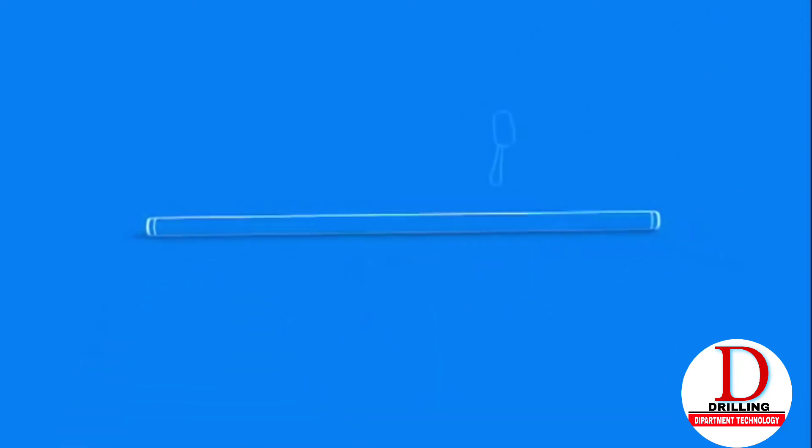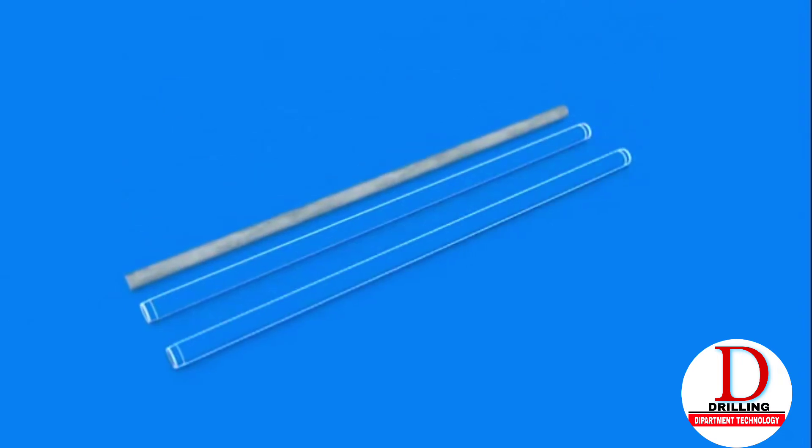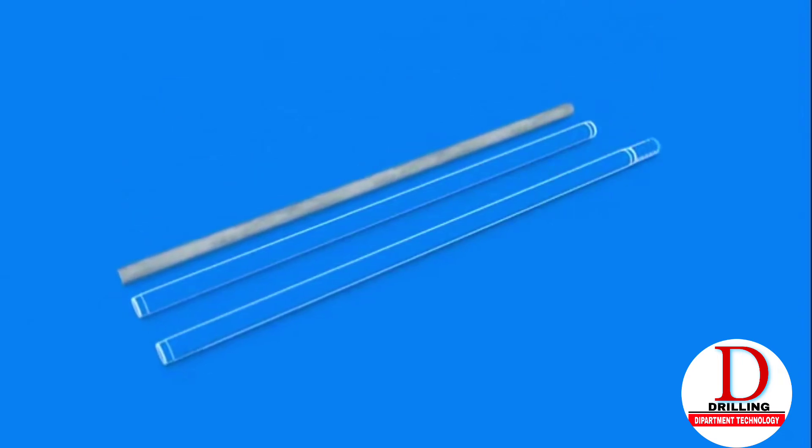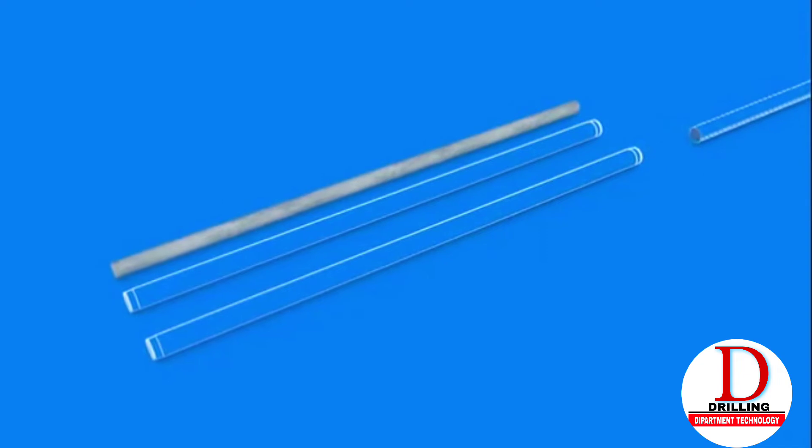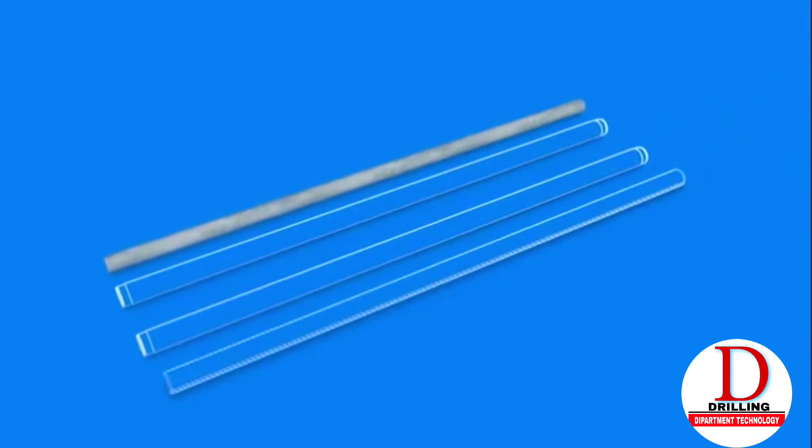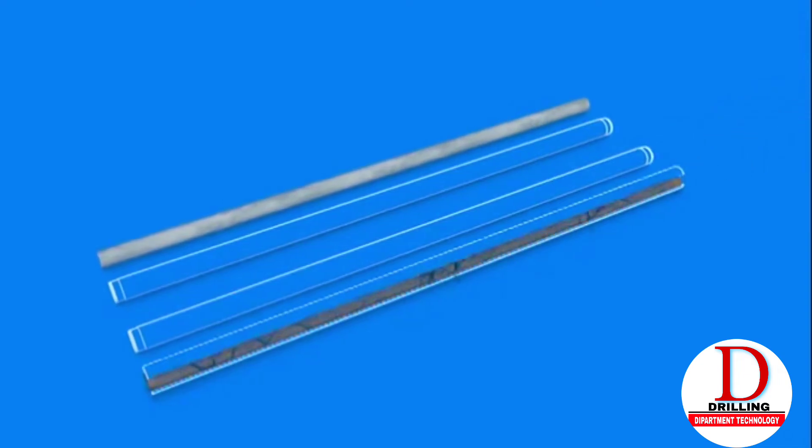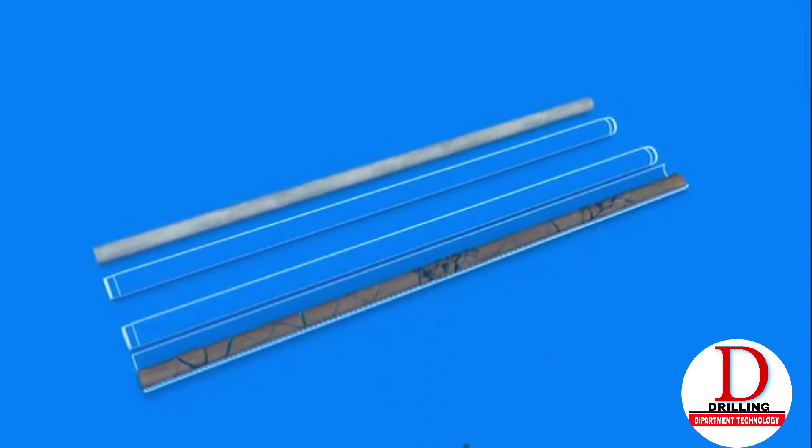This can deteriorate a soft core sample. To prevent that, a triple tube core barrel can be used, which means there is an extra inner tube inside the normal inner tube. This can be pumped out and then opened in two halves to collect the soft core sample.